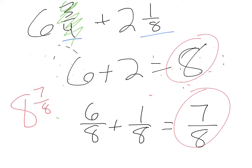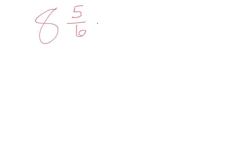Now let's take a look at subtraction. Let's look at a very similar problem: 8 and 5 sixths minus 3 and 1 fourth. Just like our addition problem, ignore the 8 and the 3 right now — we'll come back to those at the end. We want to focus on the 5 sixths minus the 1 fourth. The idea is that we need to get a common denominator, so we're looking at all multiples of 6 and all multiples of 4.